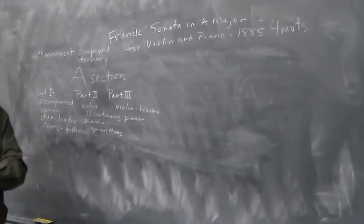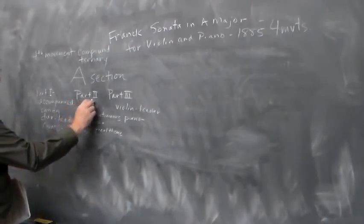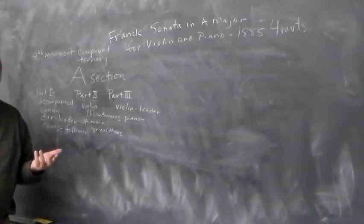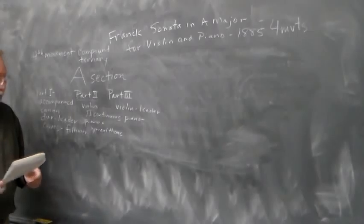So that continues for a bit and then at letter B you have this material from the part two that is restated. Only now the violin has the lyrical theme and the piano has the continuous eighth notes.